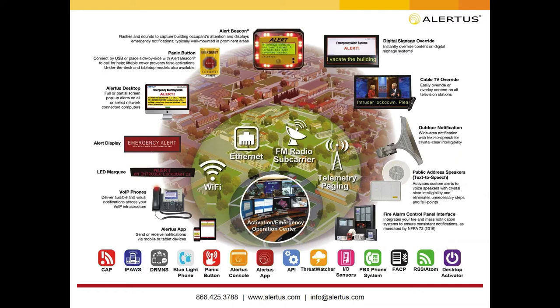There are many different endpoints we can activate, including panic buttons and other devices. Activation can come from a Common Alerting Protocol (CAP) message from another system or local municipality, our mobile app, an emergency manager issuing an all-clear, or our Threat Watcher connecting to NOAA weather alerts for severe weather. There are really a lot of different ways to bring in information, capture it, and notify people through all the primary endpoints — and today we're focusing on digital signage and cable TV.